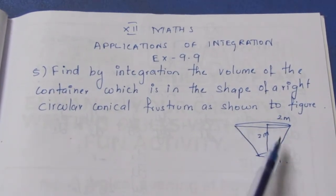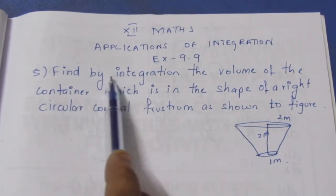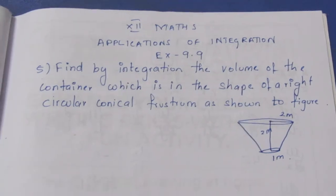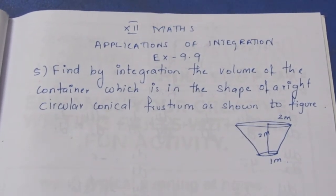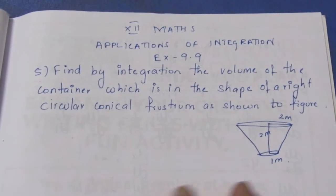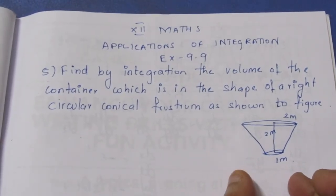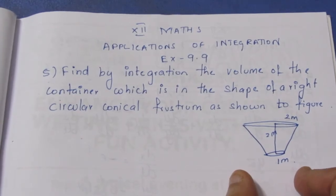This is the volume — this is a frustum. Find by integration. We could use the volume of the frustum formula directly, but instead we will use integration. In the application of integration, we can solve for this shape and its volume.